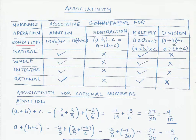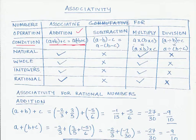Looking at the second column, the condition for associativity under addition is: does (a + b) + c equal a + (b + c)? If both ways give the same result, we say that number system is associative under addition. We have already discussed that natural numbers, whole numbers, and integers all follow the associative property under addition, and we will prove in the next video that rational numbers are associative under addition as well.